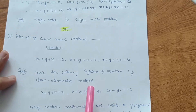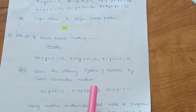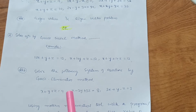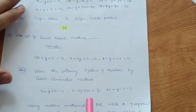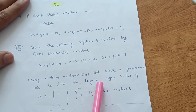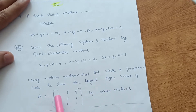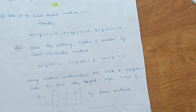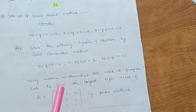I prefer you go for the first part — Gauss-Jordan method is very simple and rank of matrix is also simple. But if you are comfortable with the second part, that is your choice. Additionally, using a mathematical tool, write a program code to find the largest eigenvalue of a matrix A = [1, 1, 3; 1, 5, 1; 3, 1, 1] by Rayleigh's power method. That covers Module 5 — Linear Algebra, the passing module.